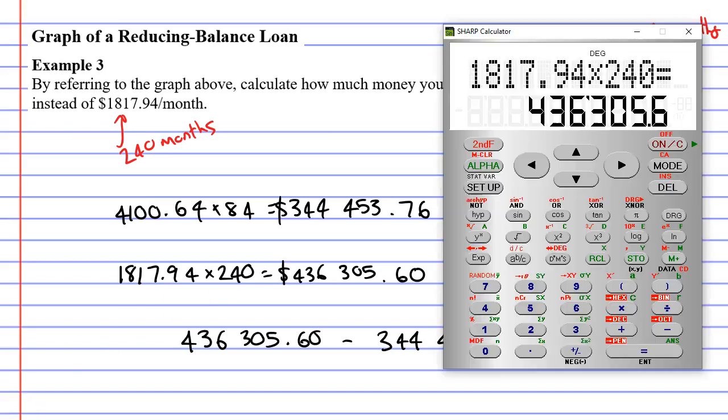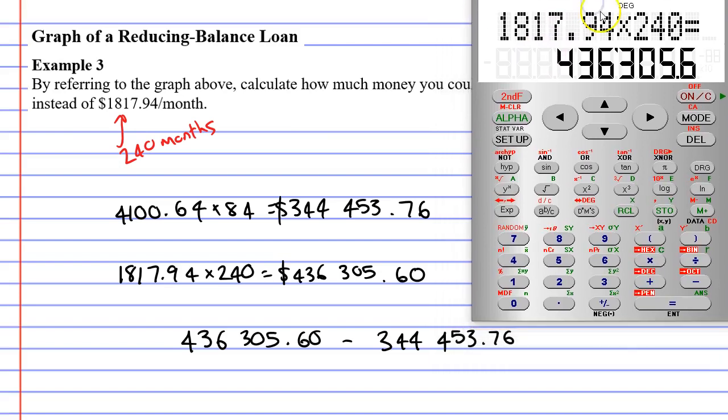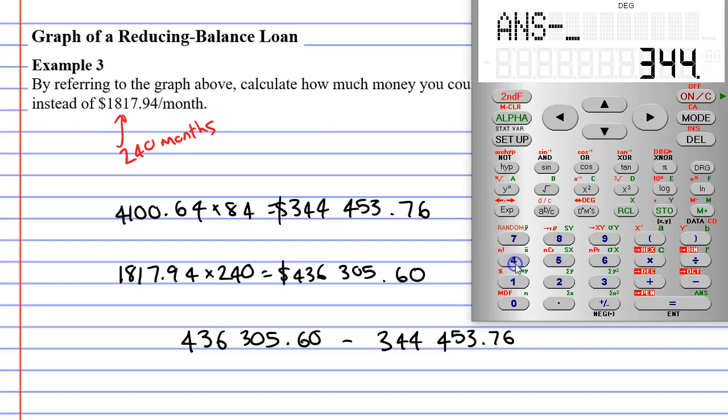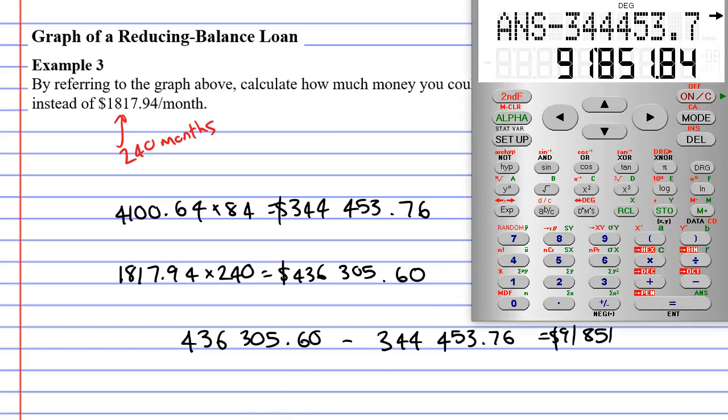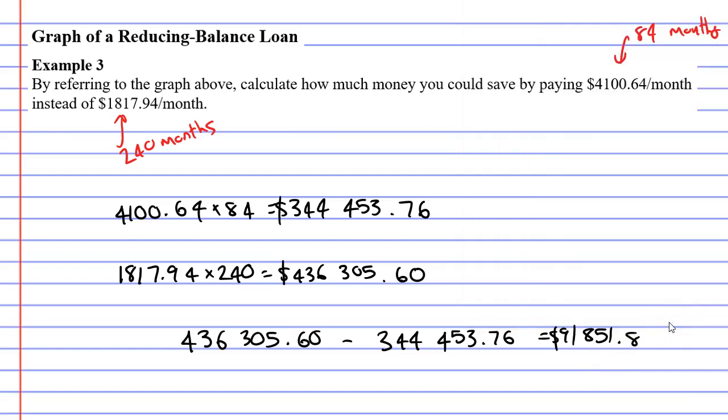Let's bring up our calculator. We're subtracting $344,453.76 equals. And it comes to $91,851.84. So you almost paid an extra $100,000 by having a cheaper repayment here.